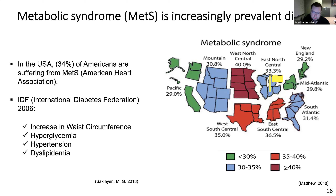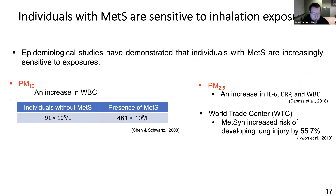Until now, our research was based primarily on serum. Recently we've been examining inhalation of particles and how the biocorona may affect exacerbated toxicity. Epidemiologically, it's been established that individuals with metabolic syndrome are increasingly sensitive to exposures: inhalation of particulate matter ≥10 microns causes an exacerbation in white blood cells in circulation; exposure to PM2.5 causes increased interleukin-6, C-reactive protein, and white blood cells; and first responders to the World Trade Center event with metabolic syndrome had a risk of developing lung injury increased by over 50%. This demonstrates that individuals with metabolic syndrome have an exacerbated response to inhalable insults.